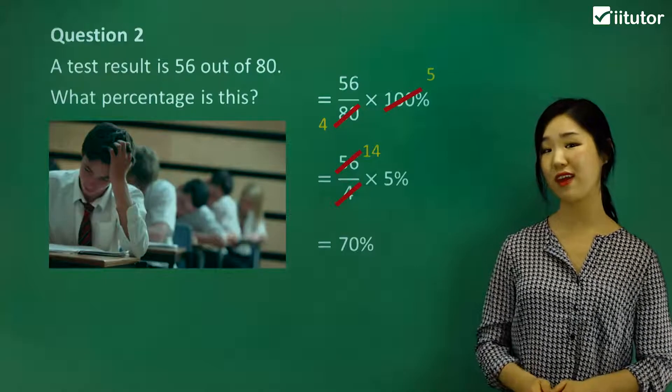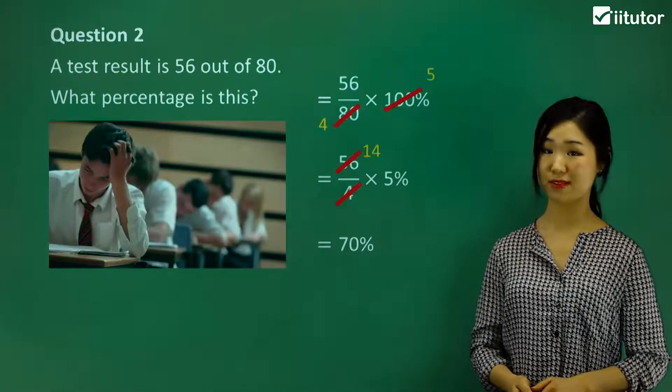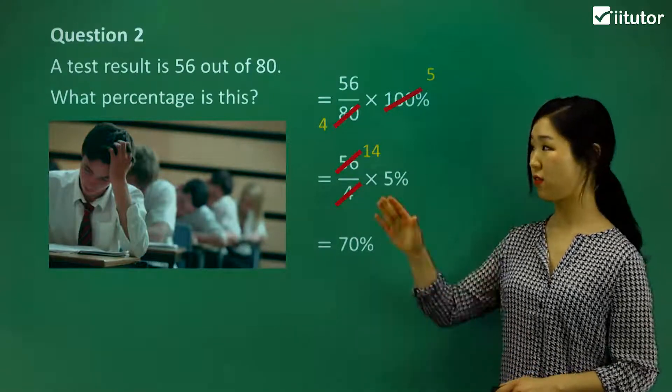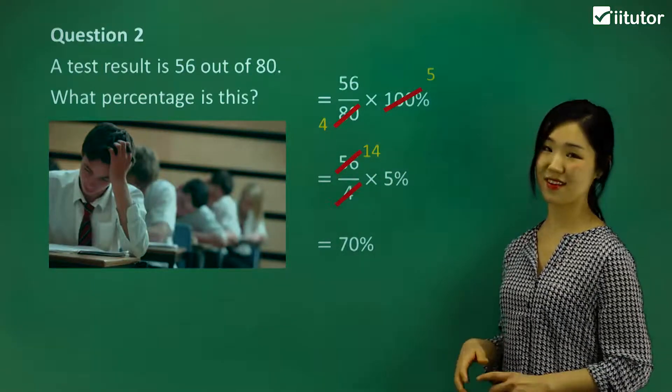So now what we have left is 14 times 5%. We can multiply it and get 70. 14 times 5 is 70, so it's simply 70%. That reflects the score of the test. Make sense?